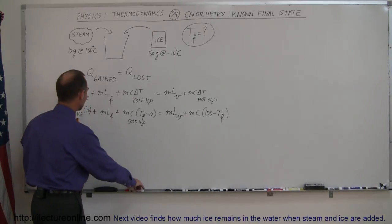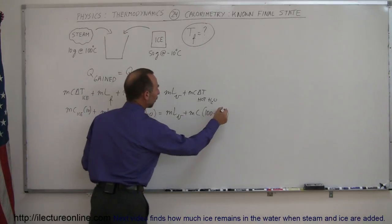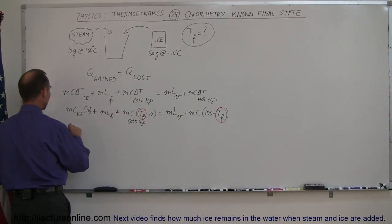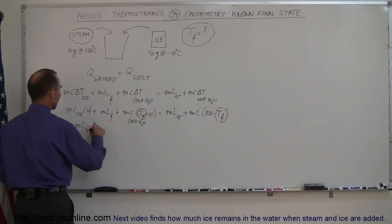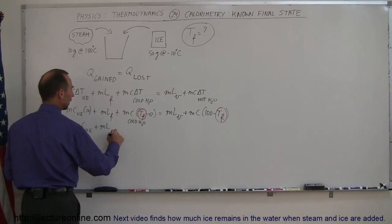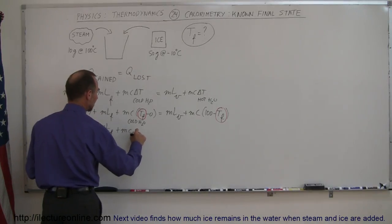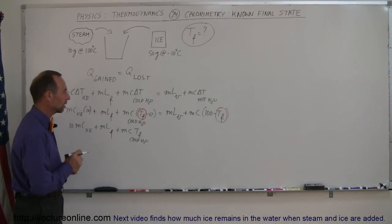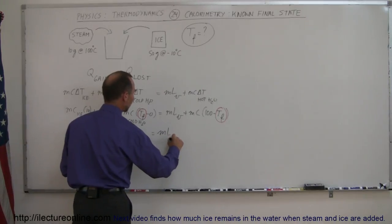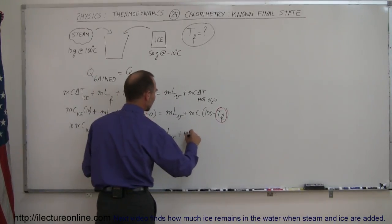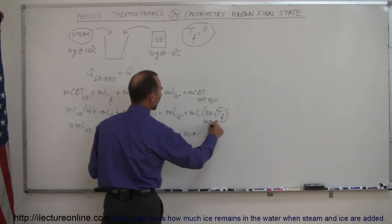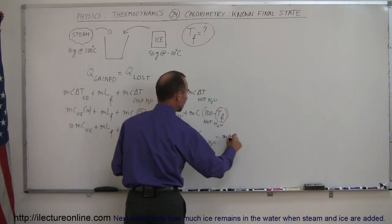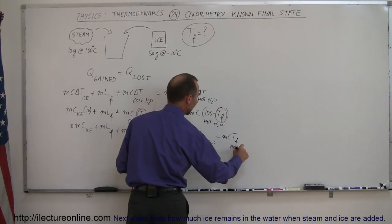Now we rewrite the equation to isolate T_final. Expanding the parentheses: 10·mc_ice plus m·L_f plus mc_cold·T_final equals m·L_v plus 100·mc_hot minus mc_hot·T_final. I'm using subscripts to keep track of which mass and specific heat each term refers to.